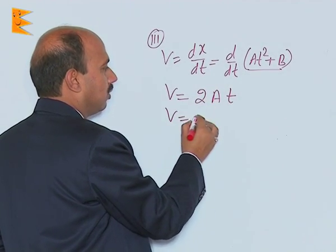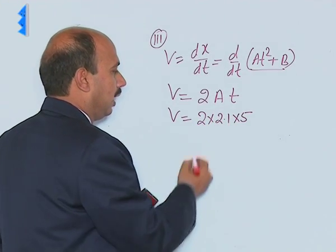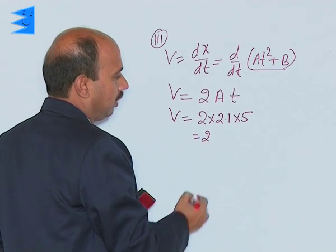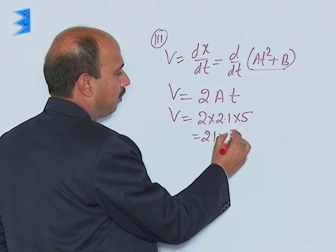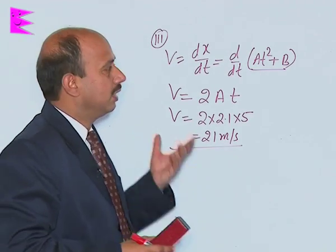V = 2 × 2.1 × 5, that will be 21 meter per second. This is instantaneous speed or instantaneous velocity.